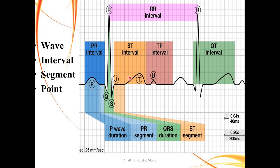Regarding the point: in the whole ECG strip there is only one point, called the J point. Any elevation of this J point can indicate myocardial infarction — an ST-segment elevation MI. Finally, a complex is a group of waves. The QRS complex is called a complex because it is a group of waves including the Q wave, R wave, and S wave.